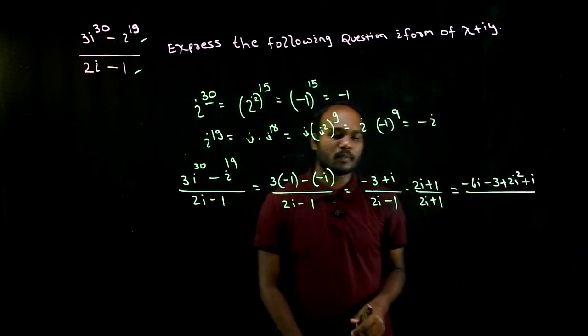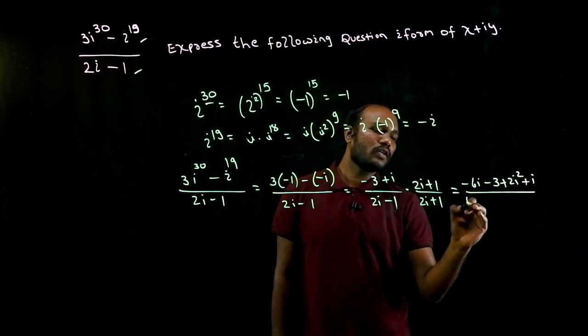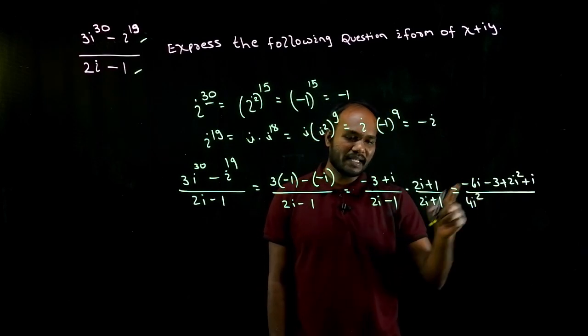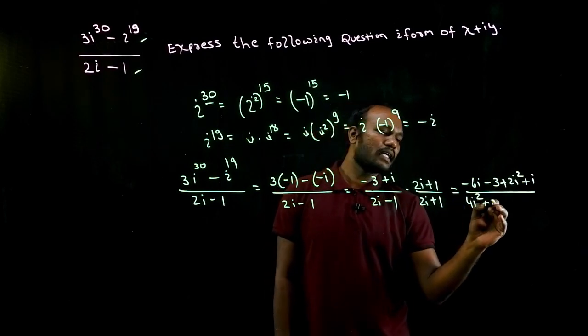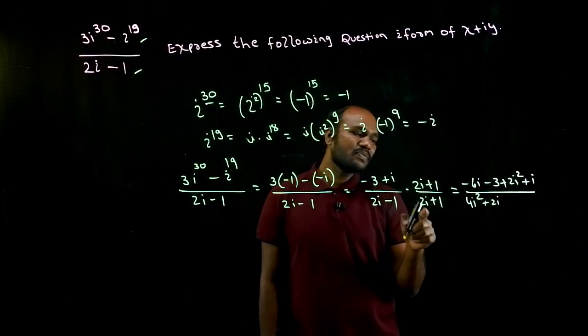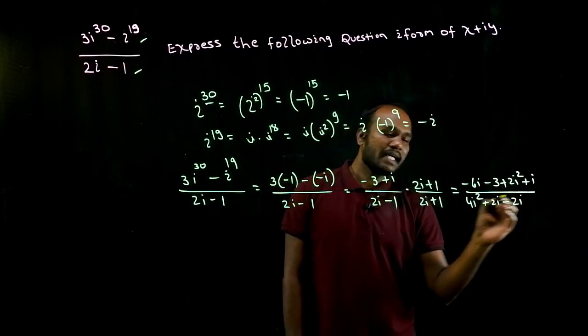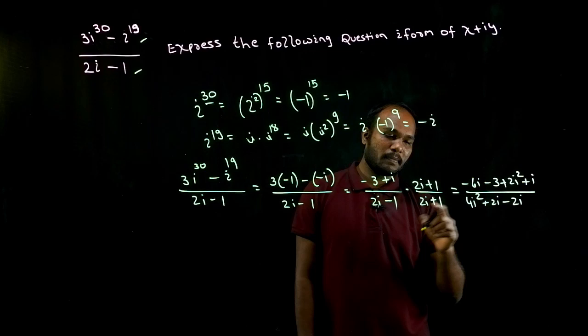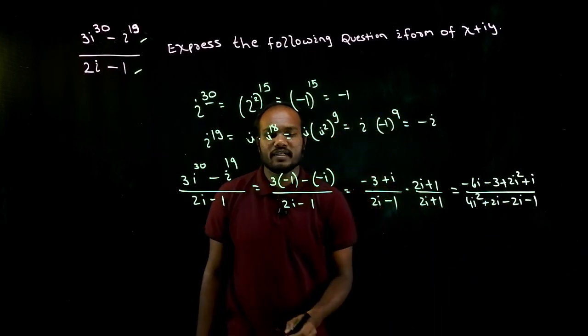In the denominator, let's go to denominator. 2i into 2i is what? 4i square. 2i into 1 is plus 2i. Next up, minus 1 into 2i is minus 2i again. Minus 1 into plus 1 is minus 1. So what did I get?